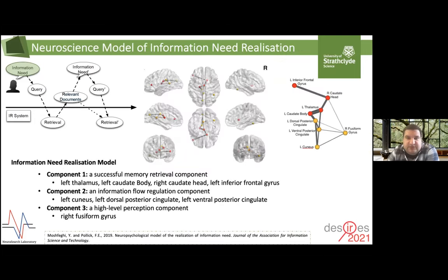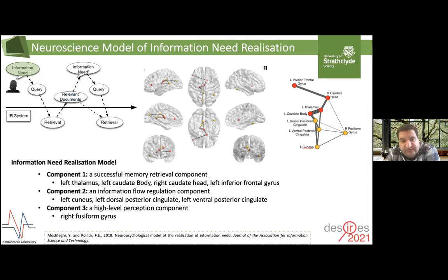Brain regions are not working in isolation — there are networks of brain regions that work together. We looked at the functional connectivity network of the brain regions identified when participants have successful memory retrieval or experience an information need. By looking at this connectivity network, we identified three main components involved in the realization of information need: the first is a set of brain regions that work together for successful memory retrieval; the second helps with information flow regulation; and the third helps with high-level perception. This is the first neuroscience model of information need realization.